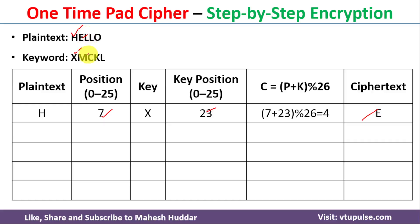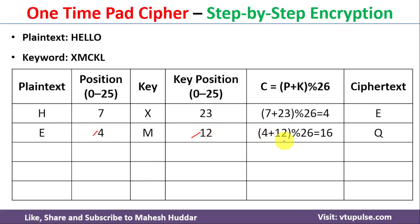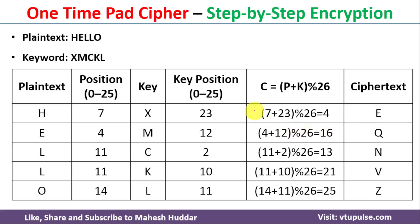For the second letter, E is at position 4 and the keyword letter M is at position 12. So 4 + 12 = 16, mod 26 = 16, and the sixteenth letter is Q. Similarly, we find the remaining cipher text letters for the remaining plain text letters. The final cipher text is E Q N V Z.